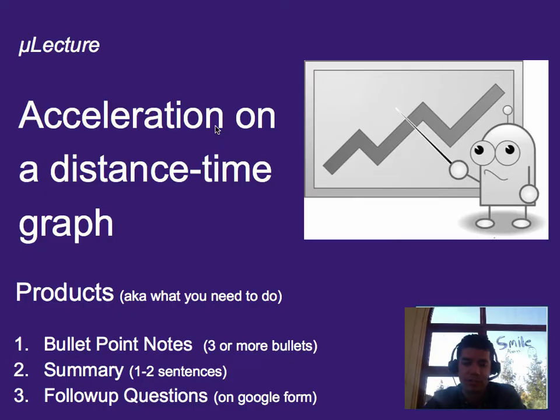Previously we had talked about the equation for figuring out how far you travel if you are accelerating. Now we're going to look at what does that look like on a graph and how do you pull information about acceleration from a graph.